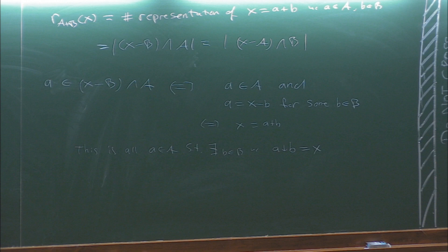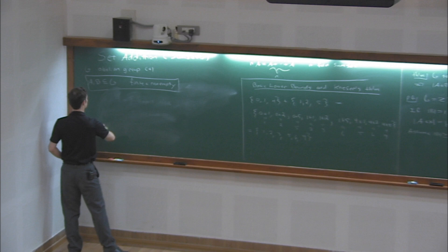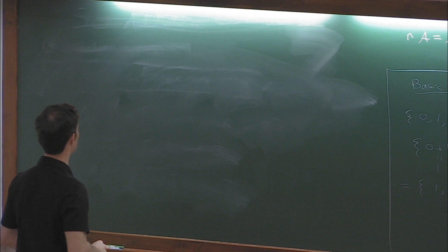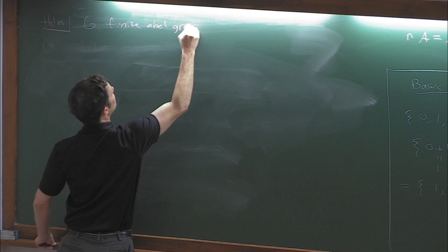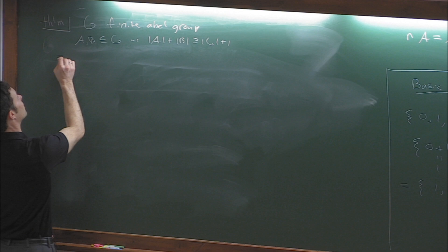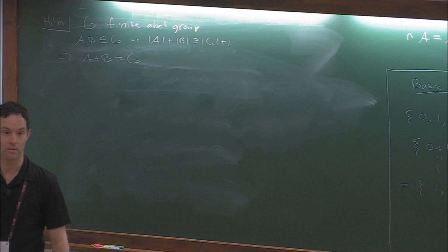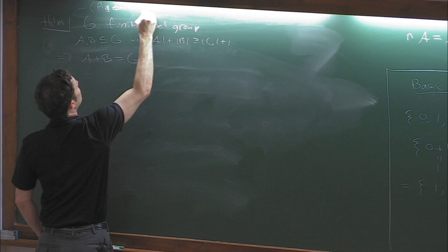Let's give another very basic result, this time for a finite group. If G is finite, A and B are subsets, and |A|+|B| > |G|, then A+B = G. This is sometimes called the pigeonhole bound, because it's a basic consequence of the pigeonhole principle.